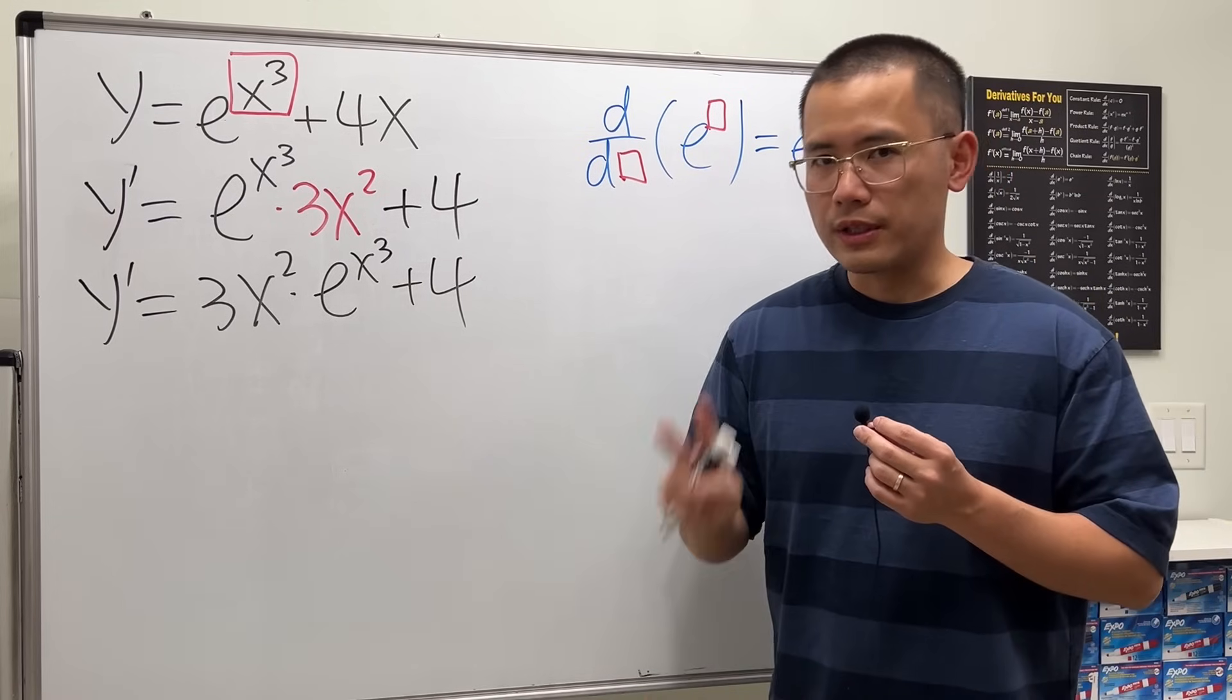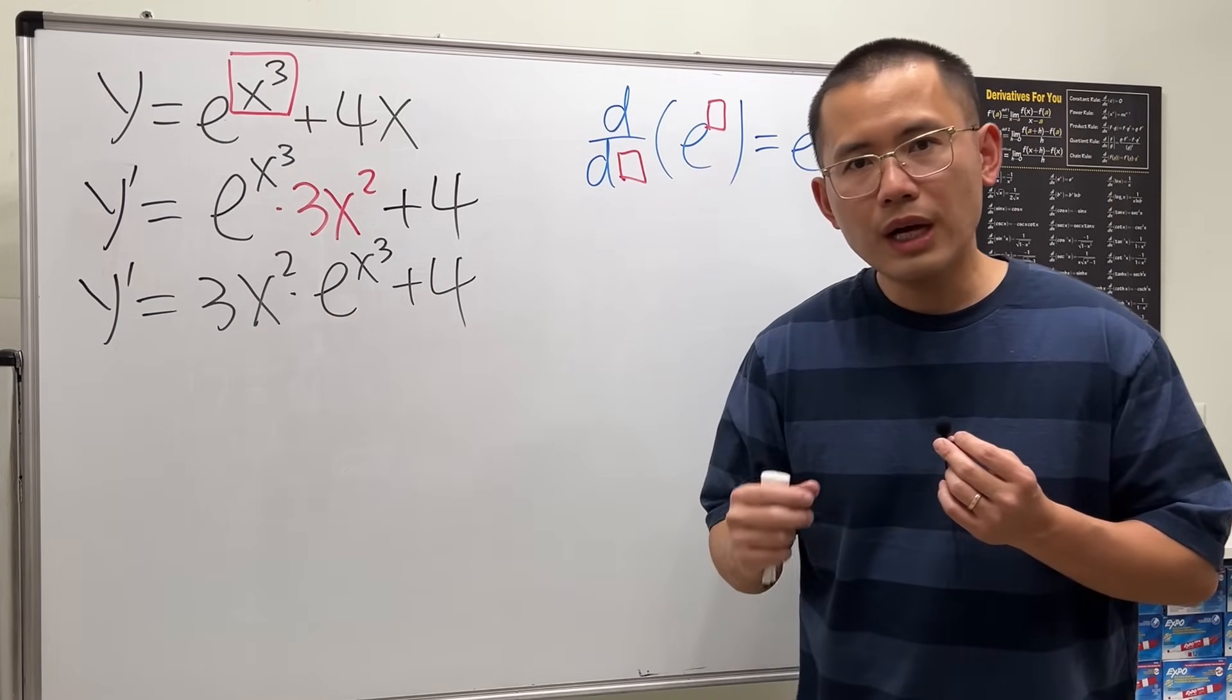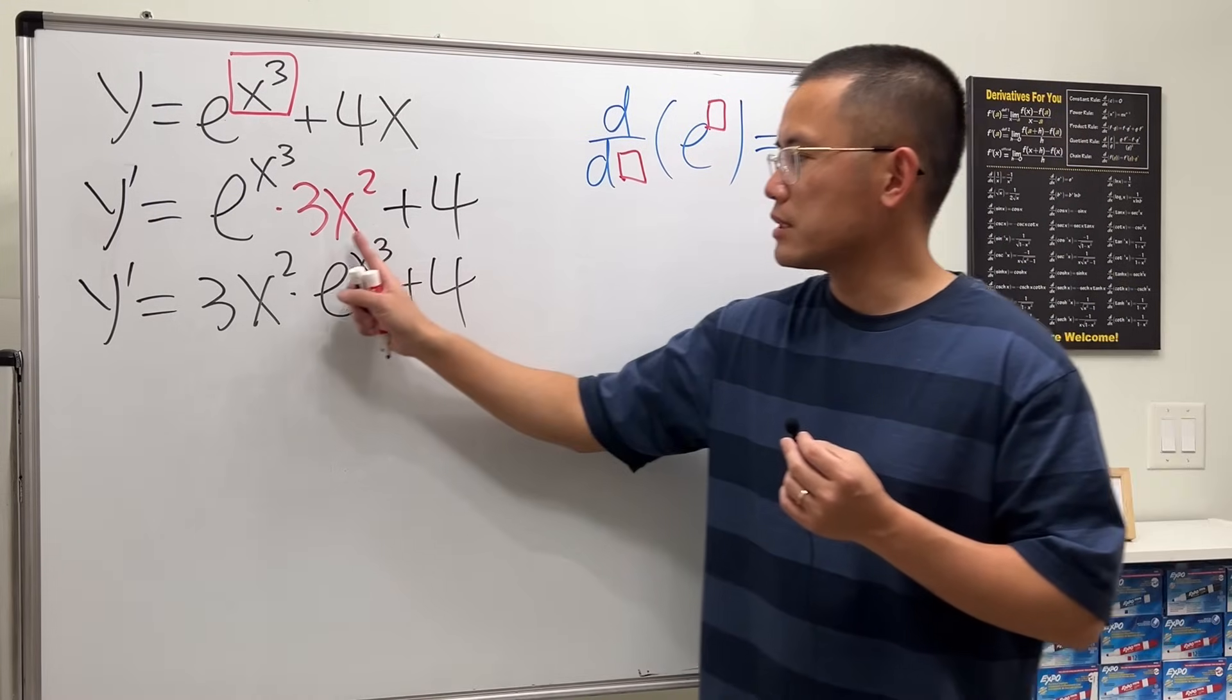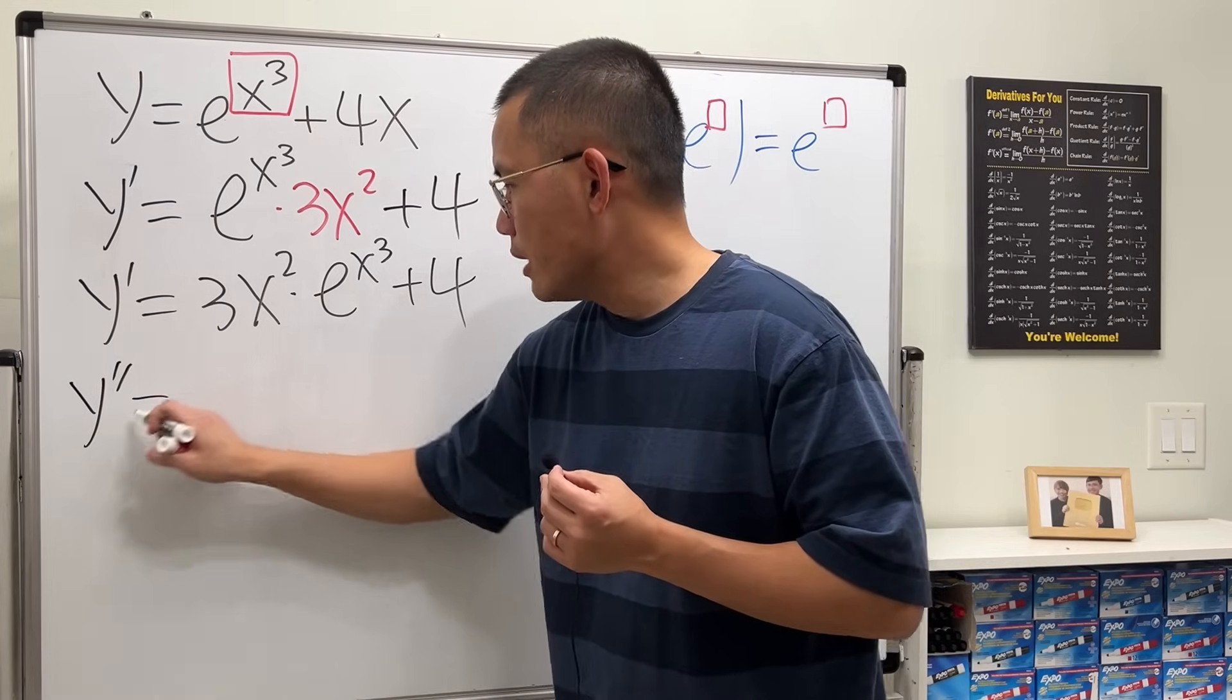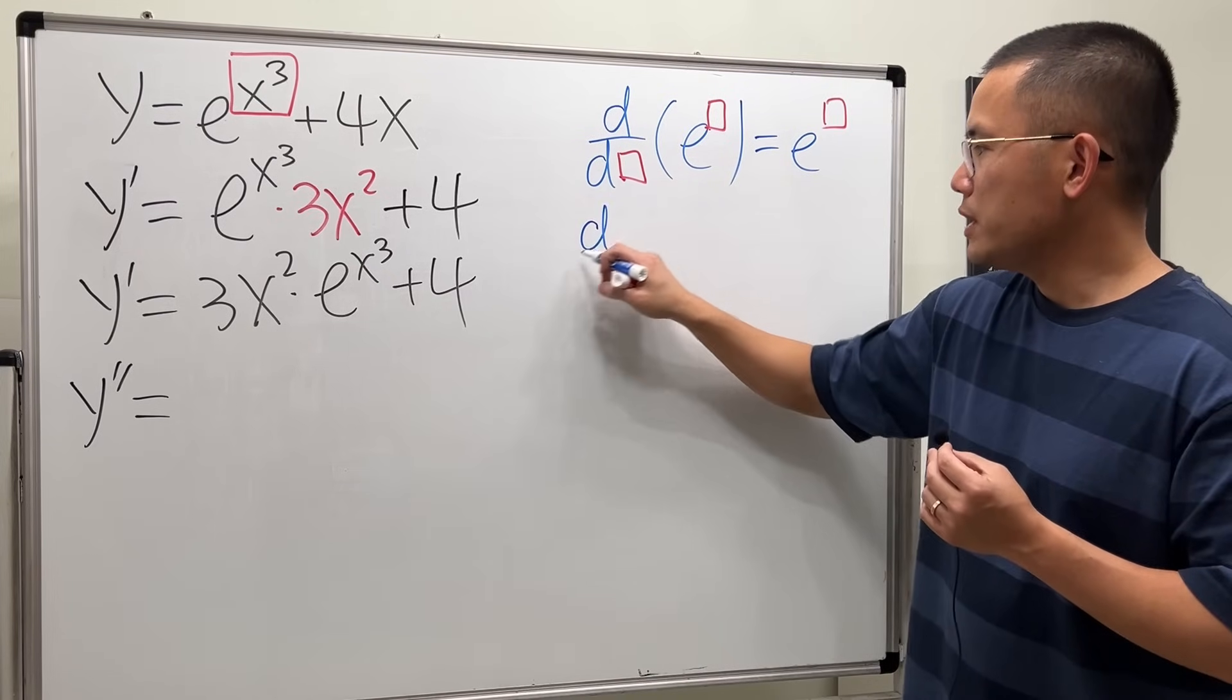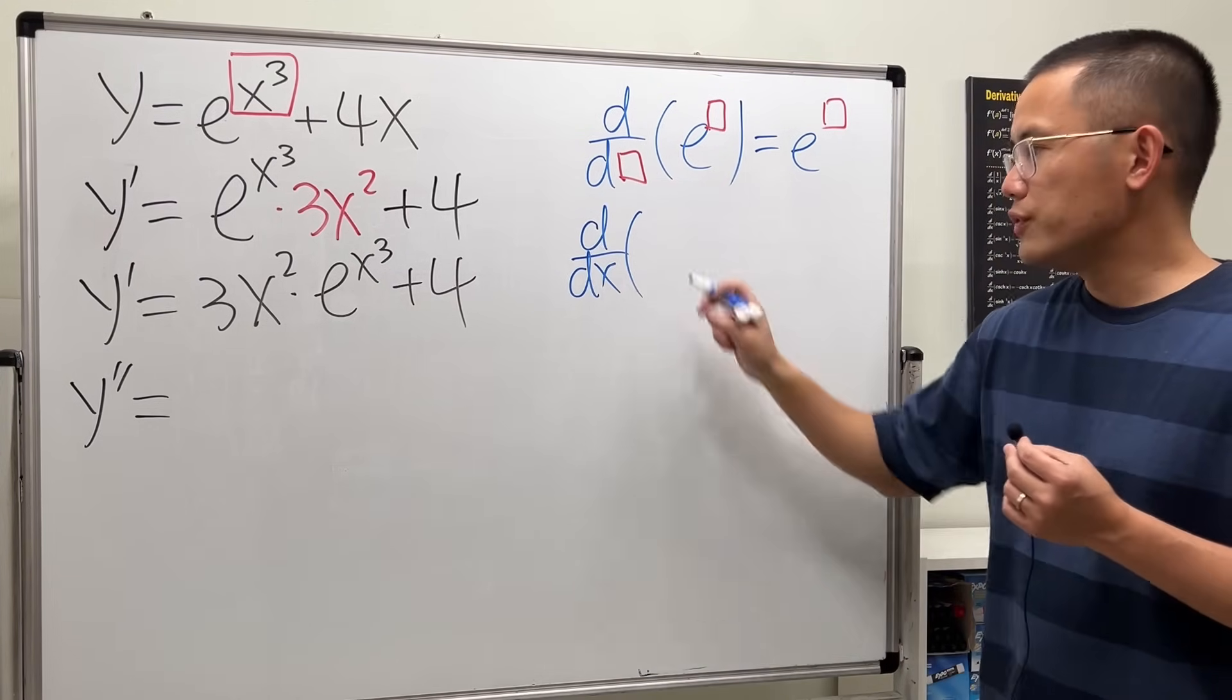Now for the second derivative, notice here we have a product of two functions, so we will have to use the product rule and also the chain rule again. For the second derivative, let me remind you the product rule first. The derivative of two functions - if we have, let's say, f and g